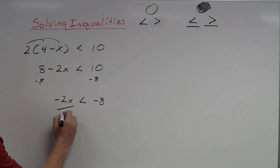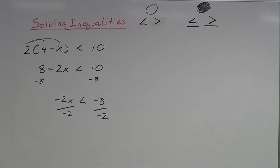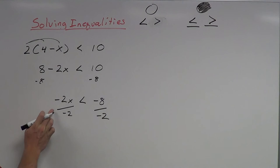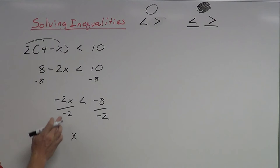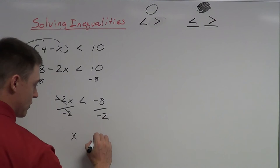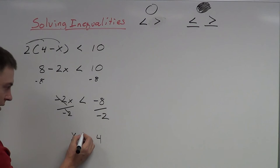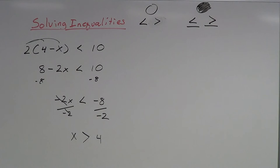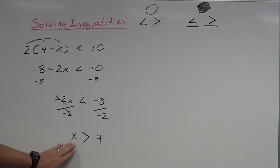Now to get x by itself, I've got to divide by negative 2. This is where inequalities differ from solving regular equations: if I multiply or divide by a negative number, I need to flip my inequality symbol. So dividing by negative 2, the left side gives x, and negative 8 divided by negative 2 is positive 4 — but the inequality symbol flips from less than to greater than. So x is greater than 4, meaning all my solutions are bigger than 4.